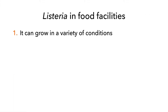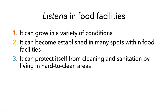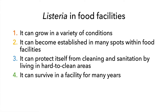The ability of Listeria monocytogenes to grow in a variety of conditions makes them a problem for food facilities. It can become established in food facilities, in processing and packaging equipment, facility structures, drains, floors, walls, and cooling units, among others. It can live in hard-to-clean areas, making it harder to eliminate with routine cleaning and sanitizing procedures. It can survive in facilities and equipment for many years, particularly in growth niches.